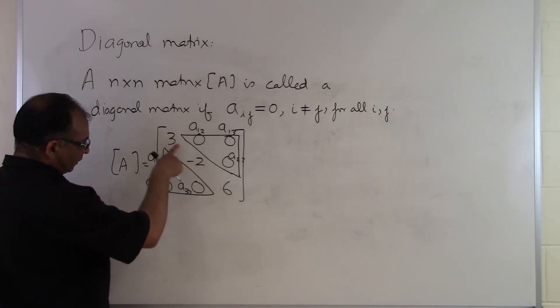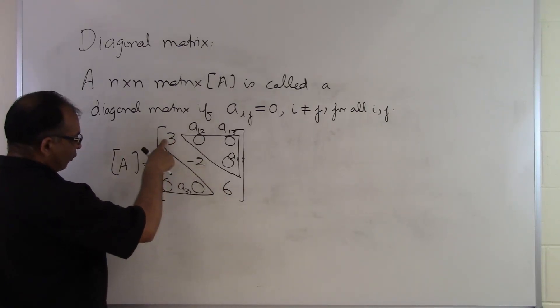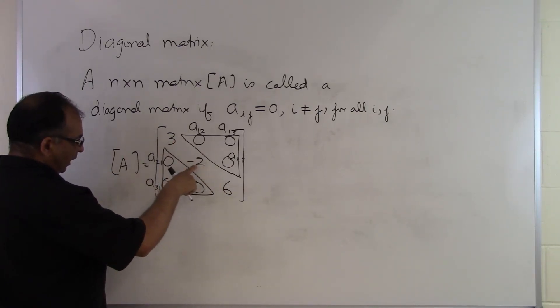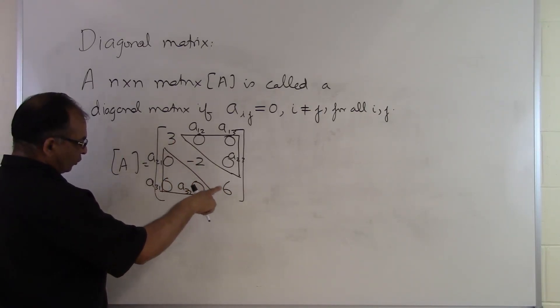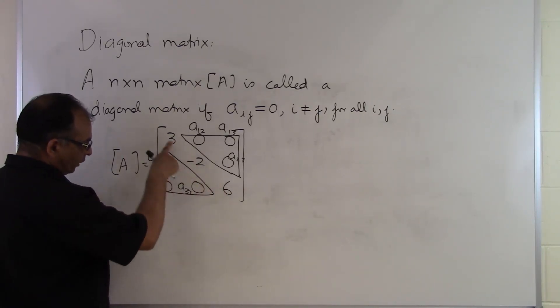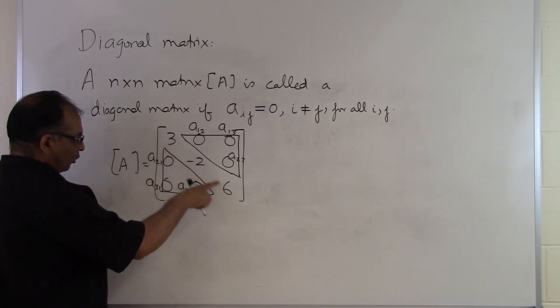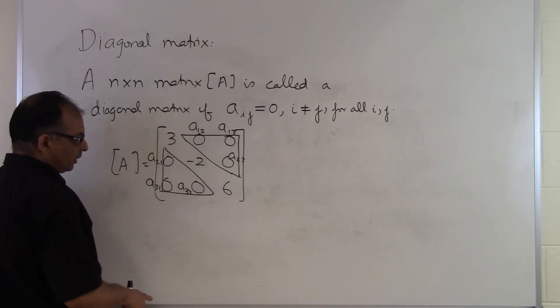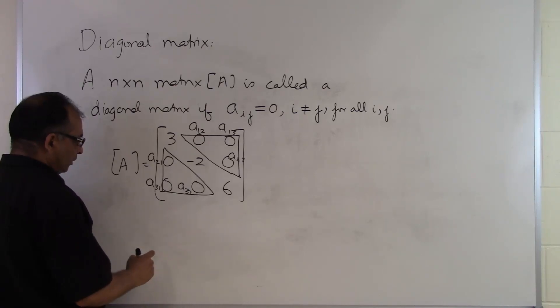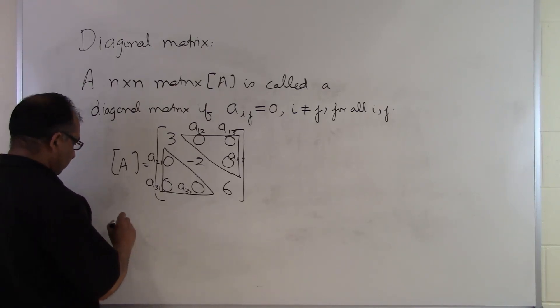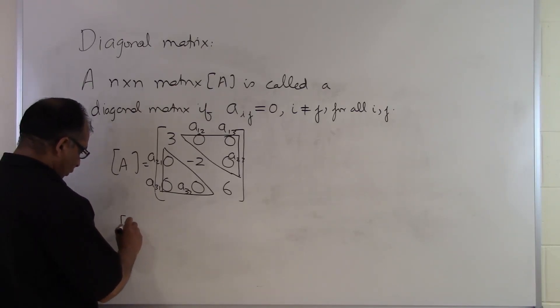For the elements A11, A22, and A33 — where they are on the diagonal and the row number and column number are the same — they can be anything you want or need them to be.